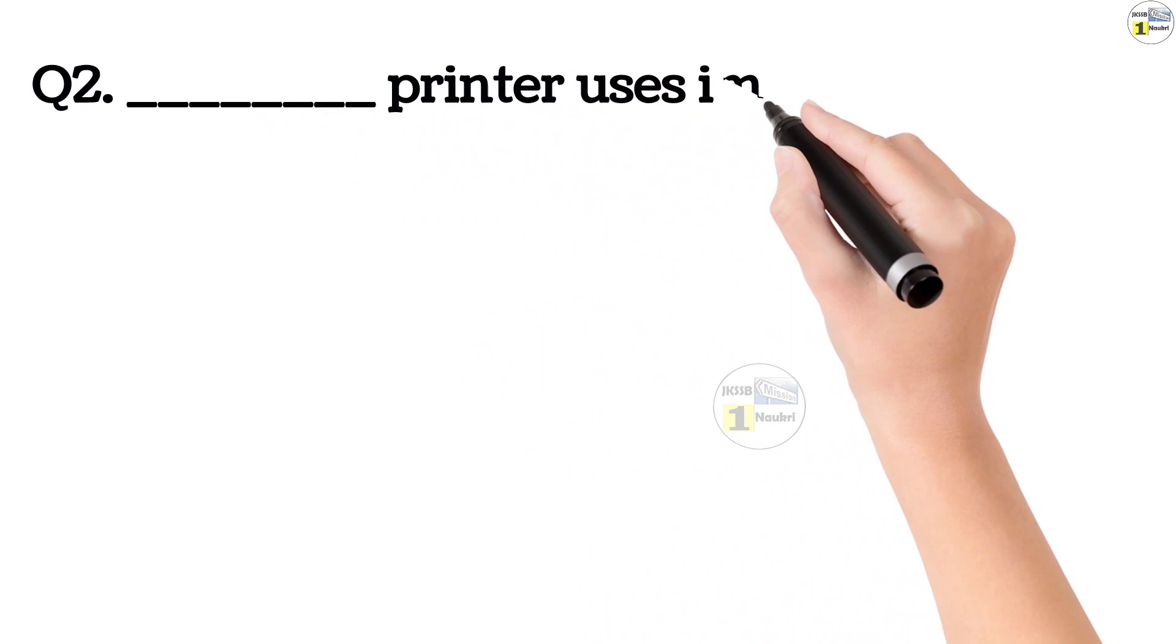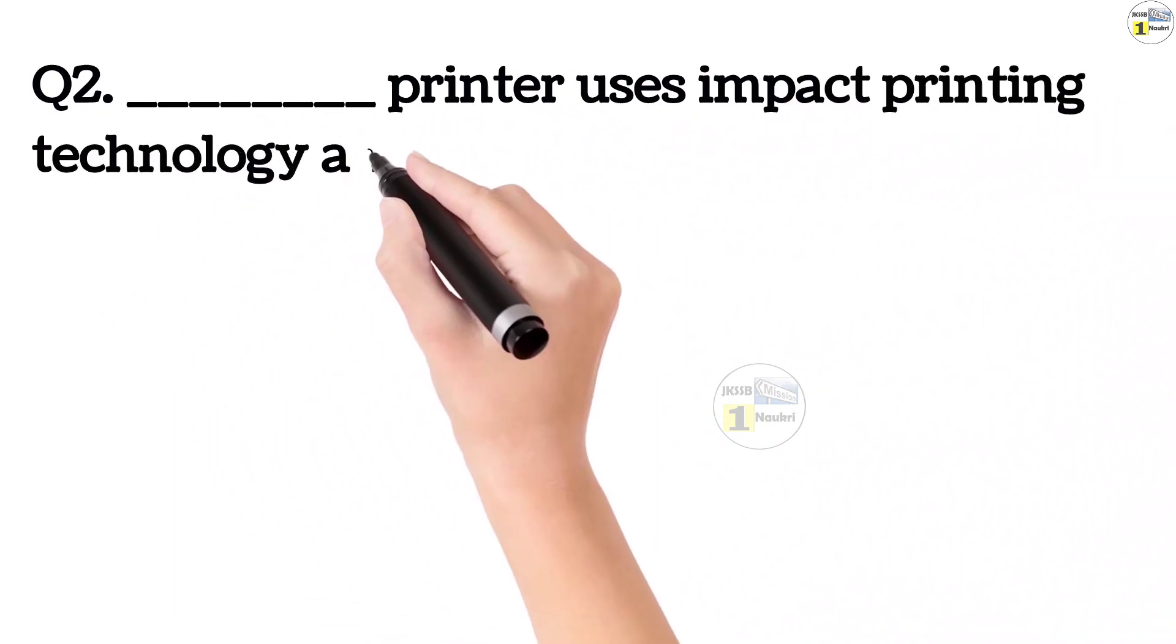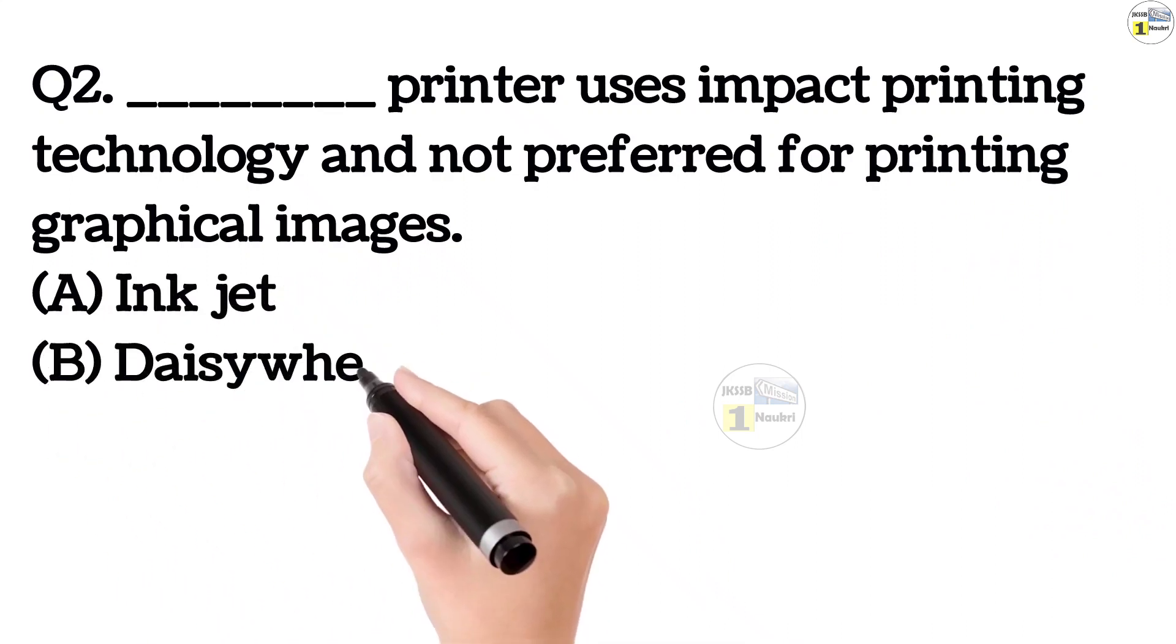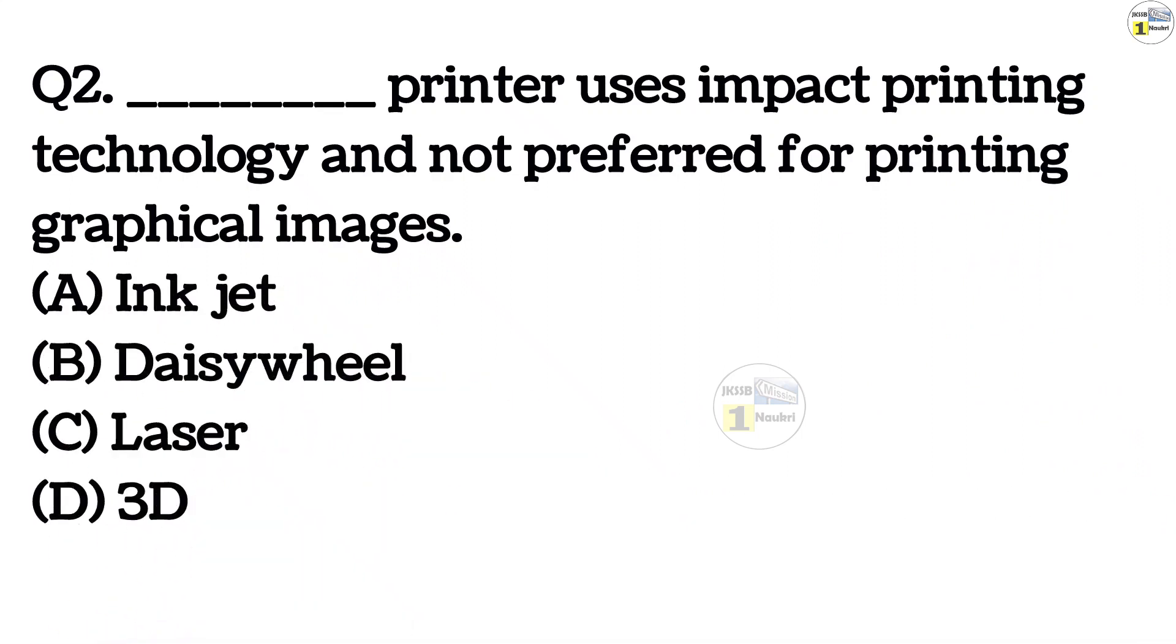Question number 2. Dash printer uses impact printing technology and is not perfect for printing graphical images. Option A, inkjet. Option B, daisy wheel. Option C, laser. Option D, 3D printer.